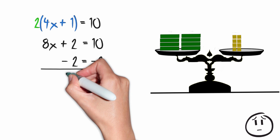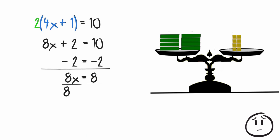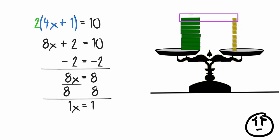This will give us 8x equals 8. To find out what 1x is we need to divide both sides by 8. 8x divided by 8 is 1x and 8 divided by 8 is 1. So 1x is equal to 1 or just x is equal to 1.